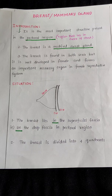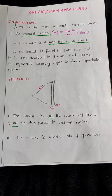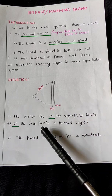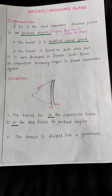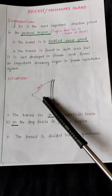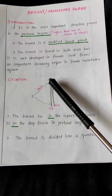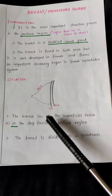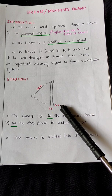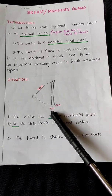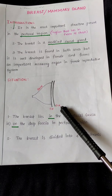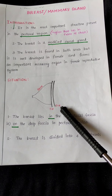Moving on to the situation of the breast. The breast lies in the superficial fascia and on the deep fascia in the pectoral region. The breast is covered by skin, located within the superficial fascia, and below the superficial fascia lies the deep fascia — so the breast lies in the superficial fascia and on the deep fascia in the pectoral region.